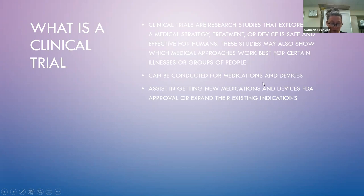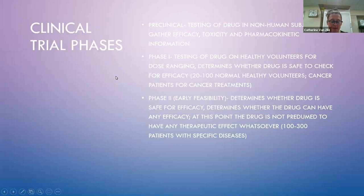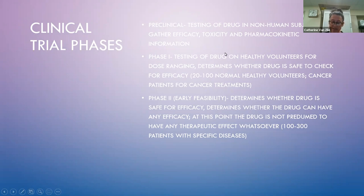Clinical research evaluates or compares one or more therapeutic interventions for safety and potential benefits. There are four phases to a clinical trial. First is pre-clinical testing of drugs in non-human subjects to gather efficacy, toxicity, and pharmacokinetic information. This phase applies to both device studies and drug studies.